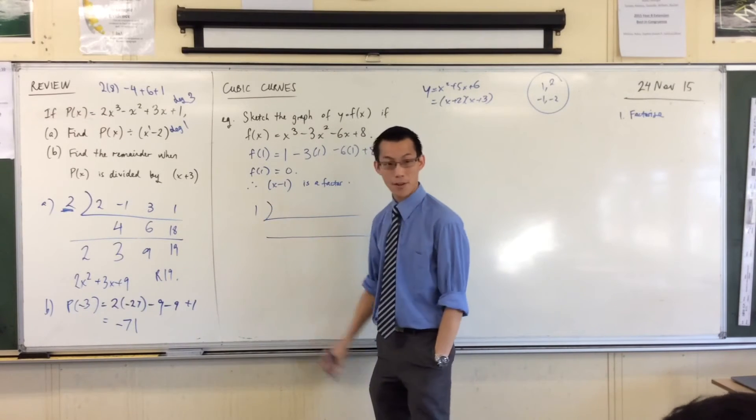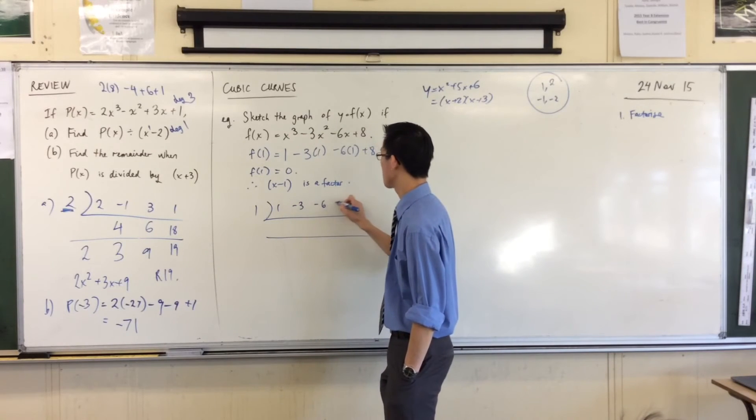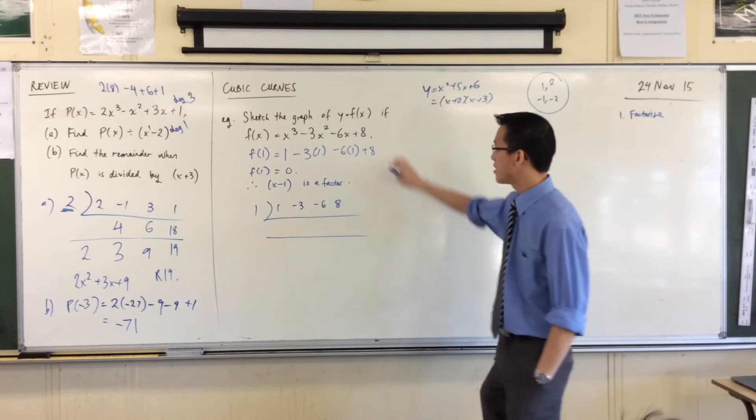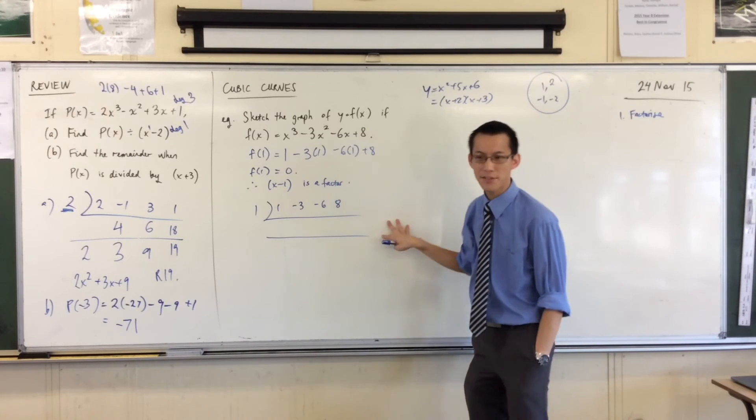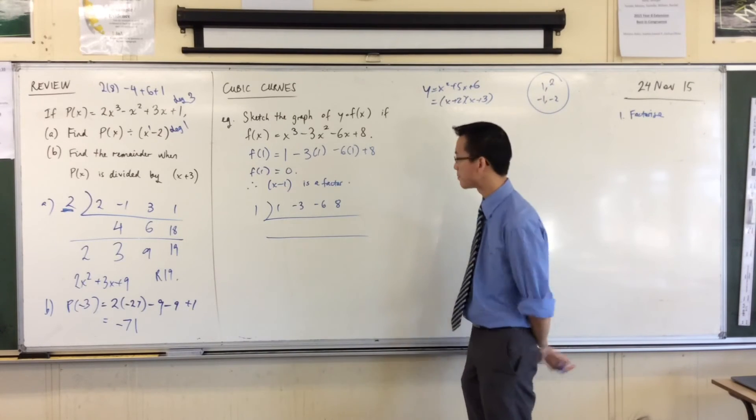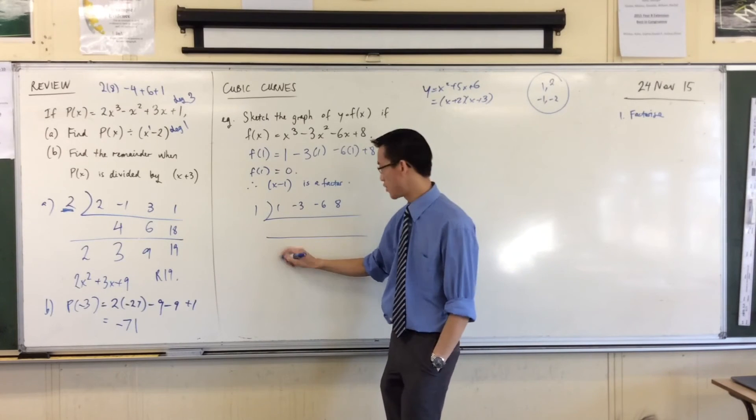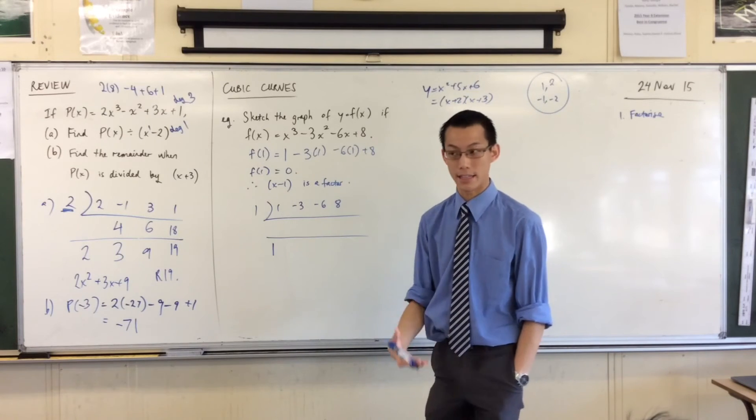I've got one out the front. And then I'm going to write down my coefficients. One, negative three, negative six, and eight. You see how all these skills build upon one another? This question never asked us to do any polynomial division. But you kind of have to in order to make some ground on it. Let's do this one quickly. I'm going to write down the leading coefficient, one. And then I'm going to do my multiplying and addition.